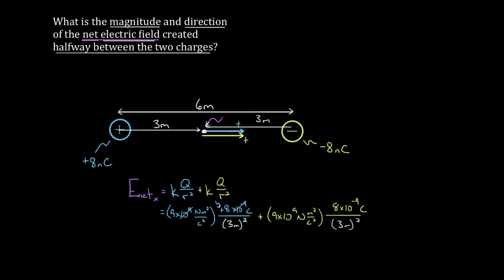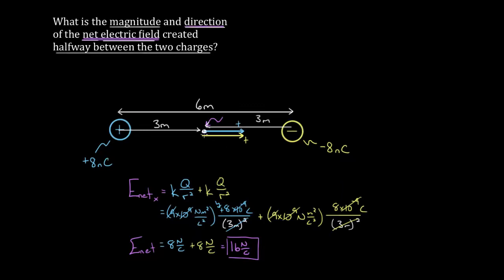Squaring three gives nine, and nine divided by nine is one, so we get eight newtons per coulomb from the first charge. The second term works out the same way — 10⁹ cancels with 10⁻⁹, nine divided by nine cancels, leaving eight newtons per coulomb. Each charge contributes eight newtons per coulomb, so the total net electric field is 16 newtons per coulomb, pointing to the right. Since both terms were equal, you could also just write one and multiply by two.